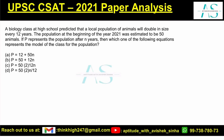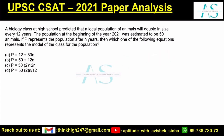A biology class at high school predicted that a local population of animals will double in size every 12 years — whatever the population is, every 12 years it will double. The population at the beginning of 2021 was estimated to be 50.